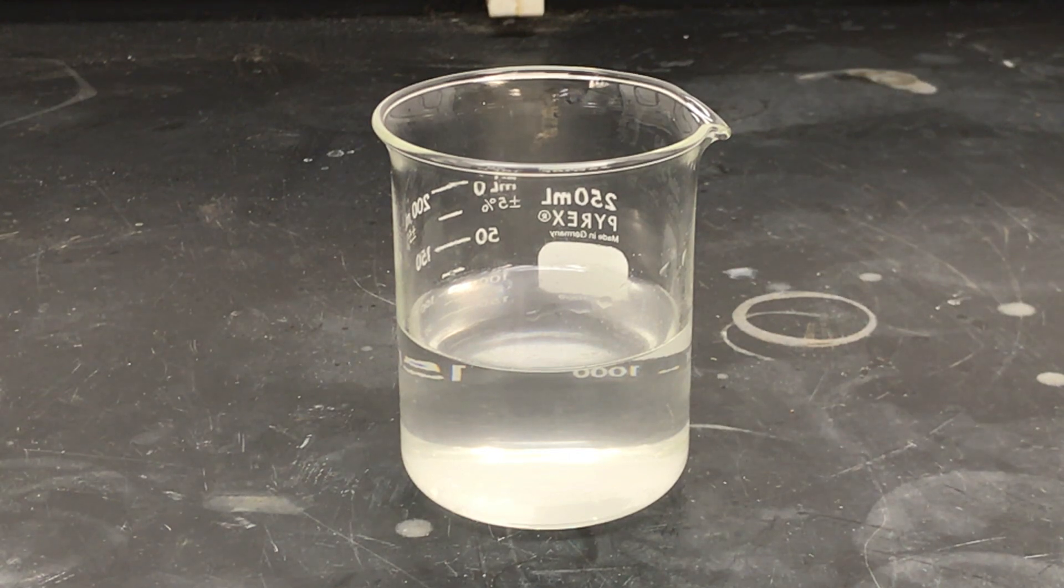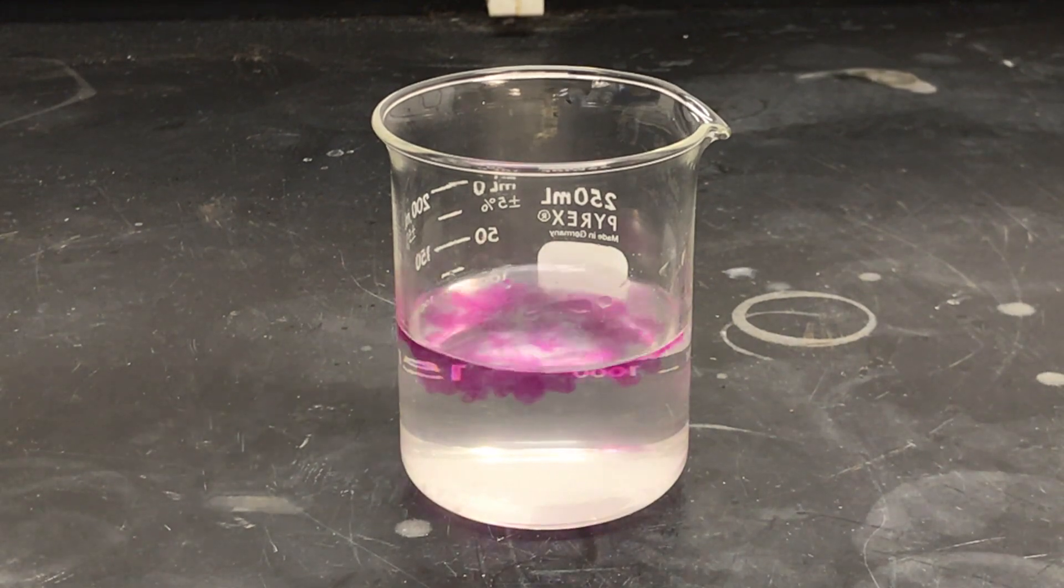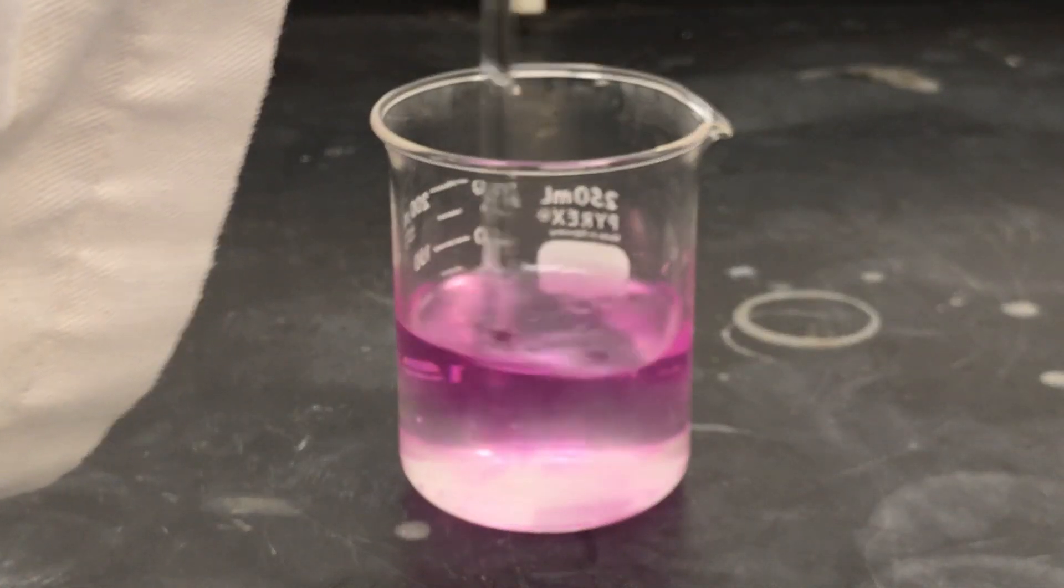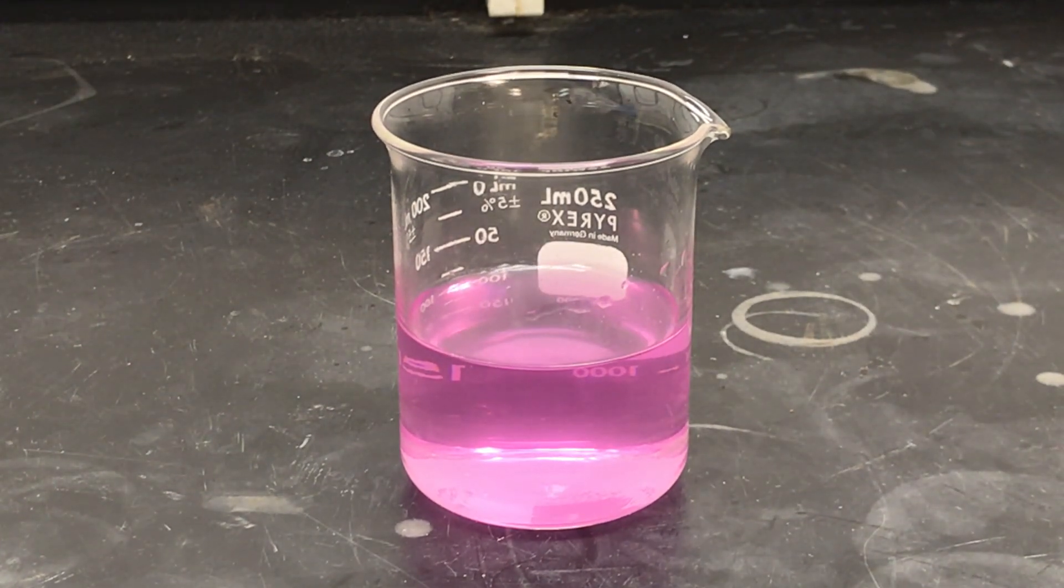We will add two or three drops of the phenolphthalein solution to our beaker with the sodium solution. Upon stirring, we see that the liquid does indeed turn pink. This confirms that the resulting sodium solution is basic and that there are hydroxide ions.